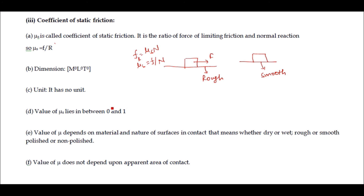A value of one for μs denotes the maximum coefficient of static friction, indicating a very rough surface, while zero denotes a very polished surface with zero frictional force. If μs equals zero, the limiting friction equals zero, meaning a perfectly smooth polished surface. Clearly, the value of μs depends on the material and nature of surfaces in contact — whether they are dry or wet, rough or smooth, polished or non-polished. The value of μ does not depend upon the area of contact.